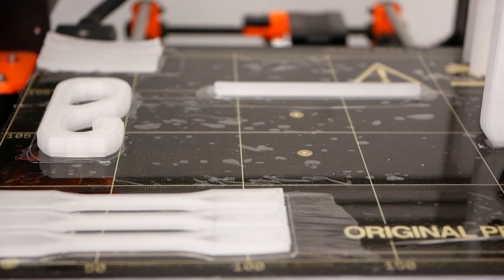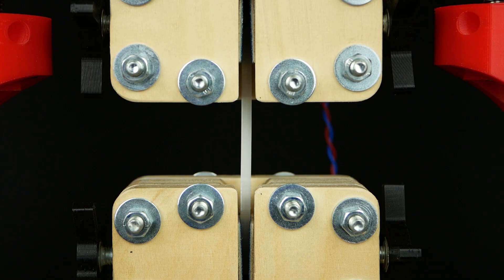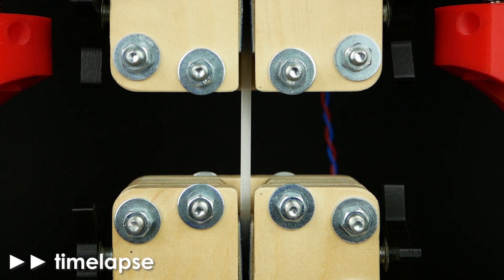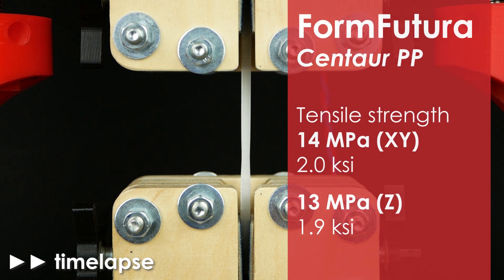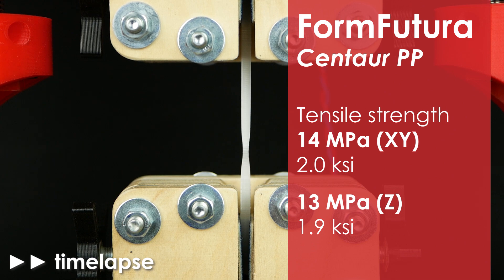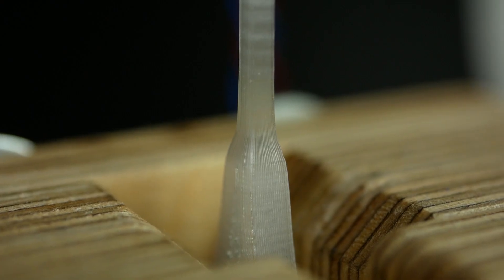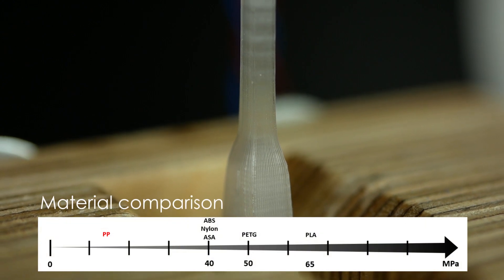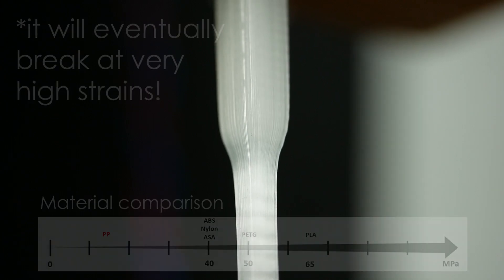Let's take a look at the mechanical properties, which is really interesting. As a start, PP is, in terms of tensile strength, not a strong material because with a maximum strength of 14 MPa, this is far below the strength of other filaments. The thing that is still outstanding is that the material doesn't break - it just yields and necks, which makes it so suitable for living hinges.